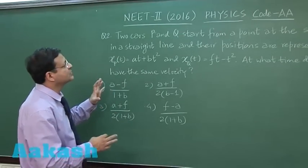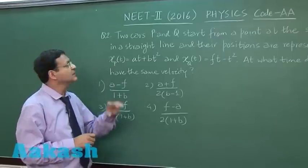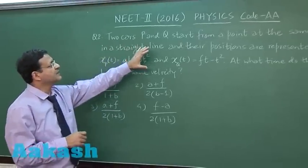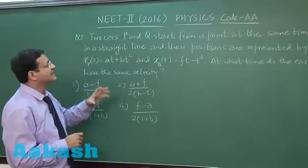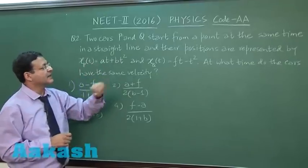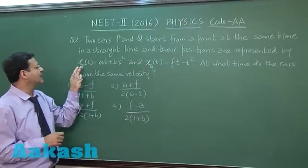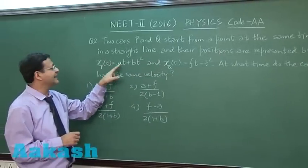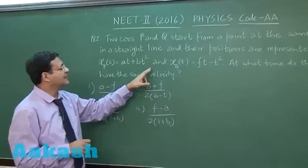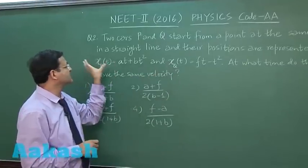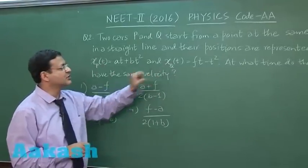Now this question 2 is based on motion in a straight line. It says that two cars P and Q start from a point at the same time in a straight line, and their positions are represented by x as a function of time. You can see at plus bt square, and x of Q - this is position of P and this is position of Q.